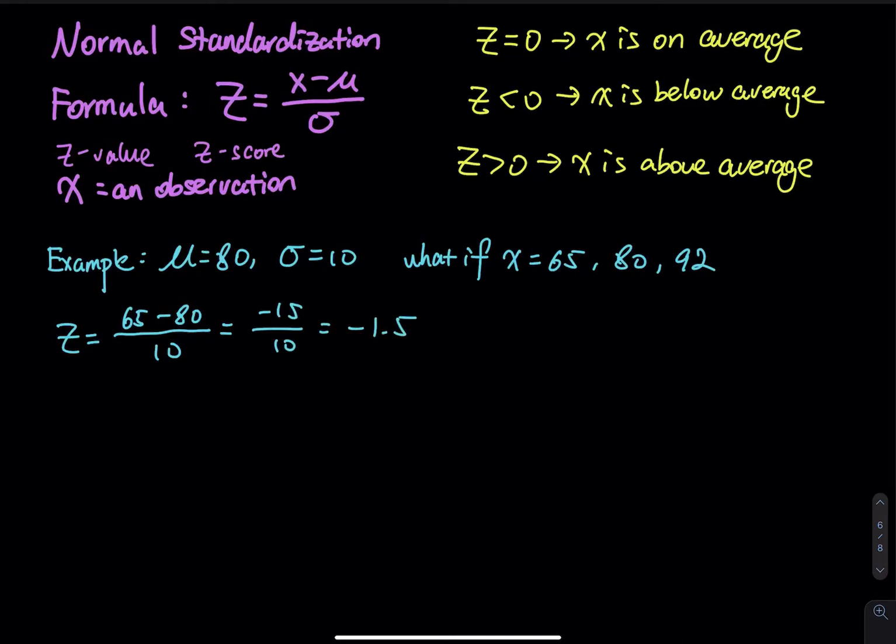If you have 65 points on the test, that means you are 1.5 standard deviations below the mean. And then let's say z equals 80. So we have 80 minus 80 divided by 10. So that 80 is already on average. So the top will be 0, 0 divided by 10 equals 0.